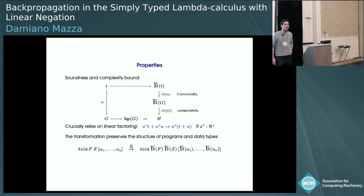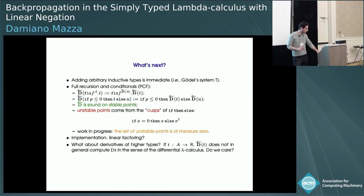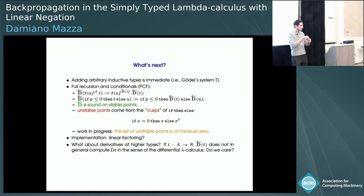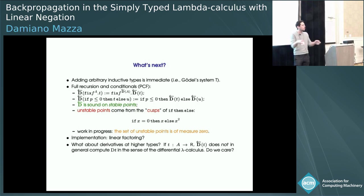Q: On measure-zero non-differentiability — similar issues arise in probabilistic programming, and one approach is to restrict to analytic functions, whose zero sets have measure zero. A: Yes, a key point is that the basic function symbols in the language are analytic. The only way you introduce unstable points is through if-then-else, which creates non-analytic things, and you have to control that non-analyticity.